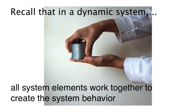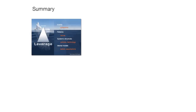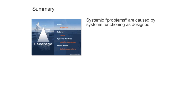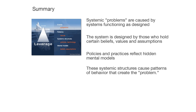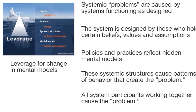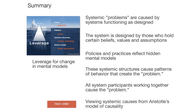In summary, the phenomena that we normally consider problems are caused by systems functioning as designed. The system is designed by those who hold certain beliefs, values, and assumptions. Those mental models are then embedded in the systemic structures through policies and practices. The systemic structures in turn cause patterns of behavior that eventually create the problem. All system participants working together cause the problem. The greatest leverage for changing the system is actually in the deepest, most hidden part of the system — the mental models that created the systemic structures and patterns. In the next video we view systemic causes from Aristotle's model of causality.